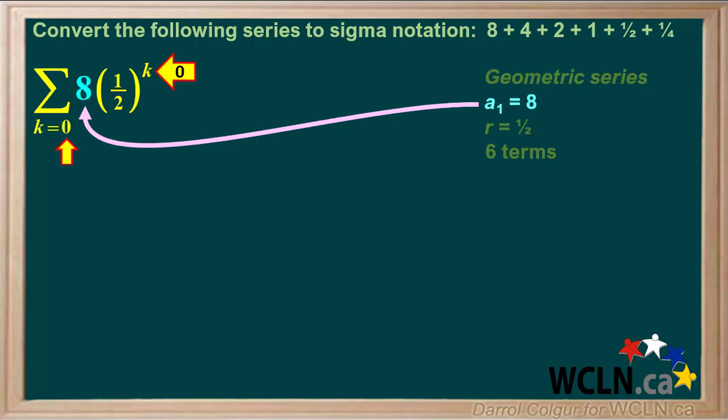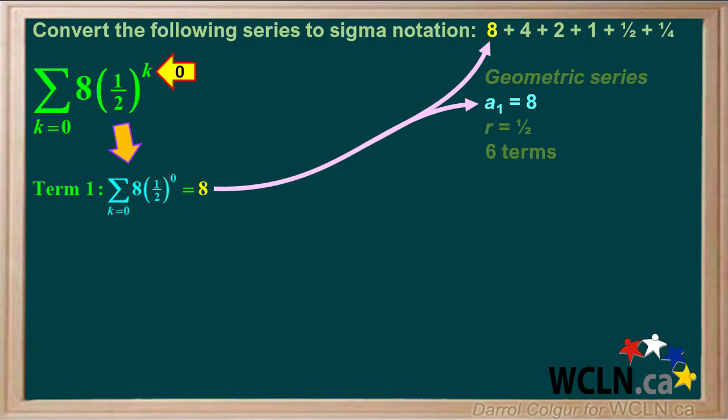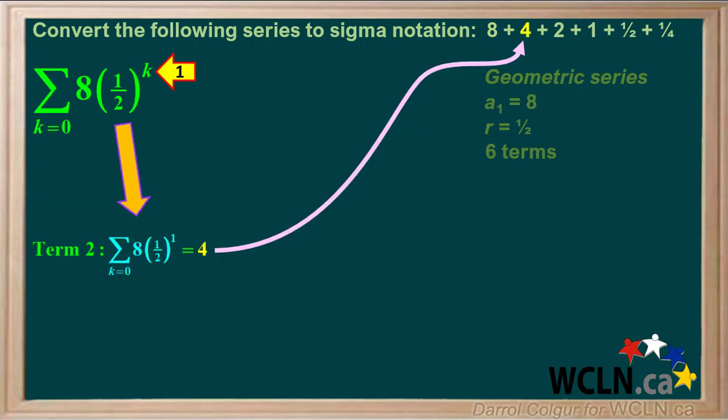If we set k as 0 for the first term and multiply 1 half to the power k by 8, we get 8 times 1 half to the power 0, which is equal to 8 for the first term. For term 2, we'll put in 1 for k, so we get 8 times 1 half to the power 1, which is equal to 4.